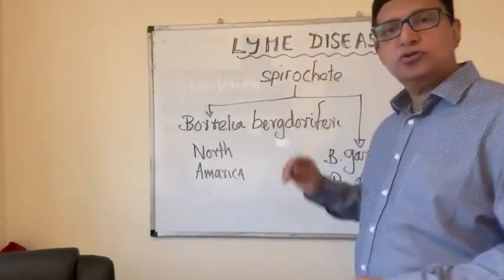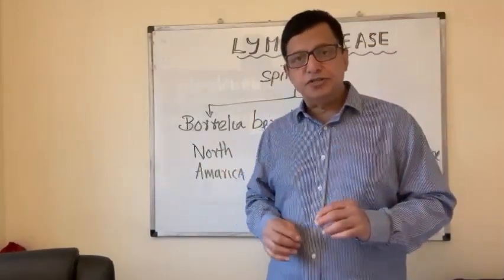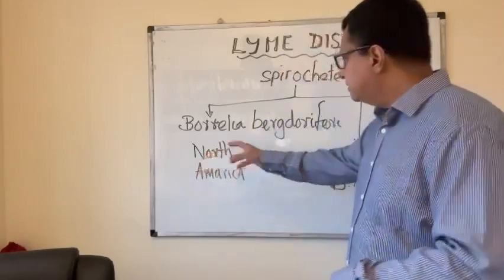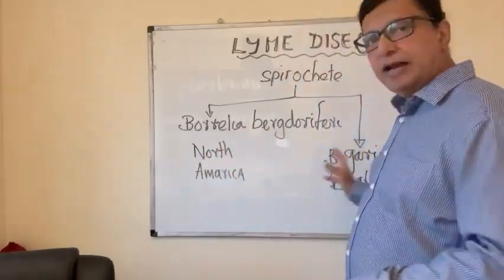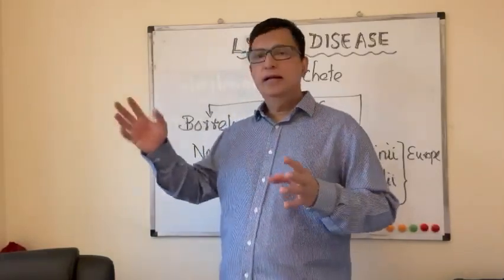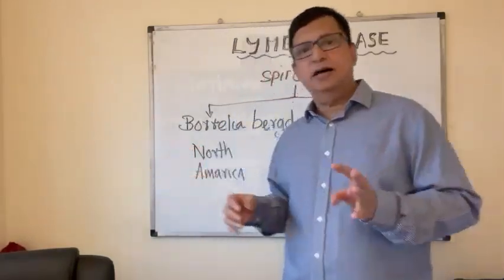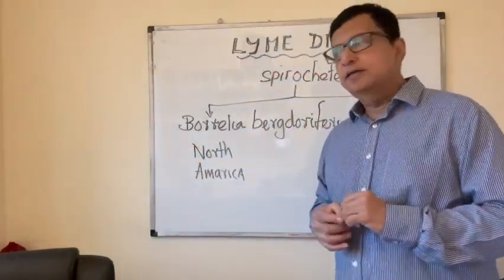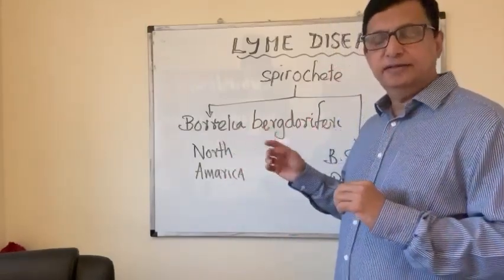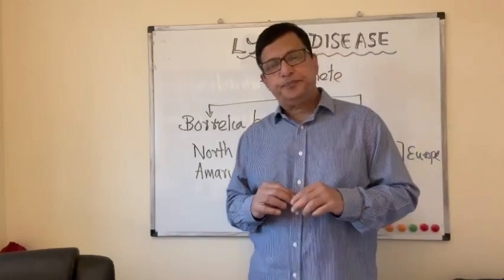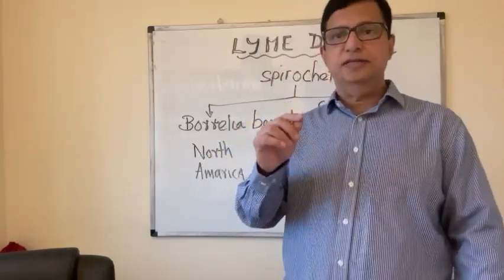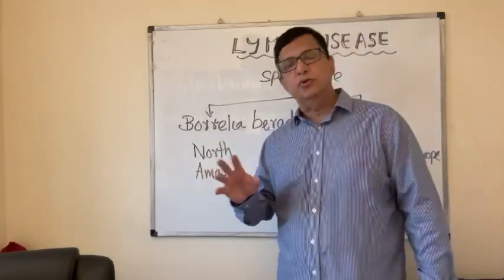Lyme disease is one of the commonest infectious diseases and it spreads in North America and in Europe, mostly where forested and jungle areas are around. It is transmitted by a black-legged tick or deer tick, and it is the second commonest infectious disease in Europe, which is second to HIV.